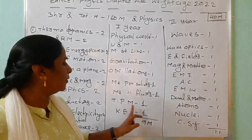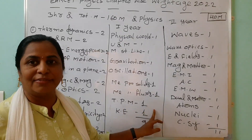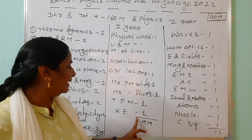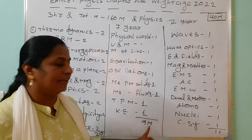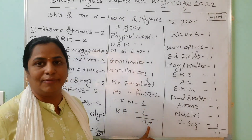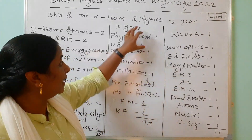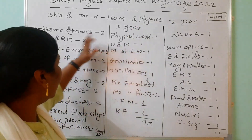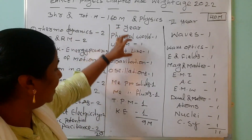Mechanical properties of solids — we are expecting one mark. Mechanical properties of fluids — one. Thermal properties of matter — one. Kinetic theory — one. So from the remaining chapters we are expecting around nine marks from this subject.